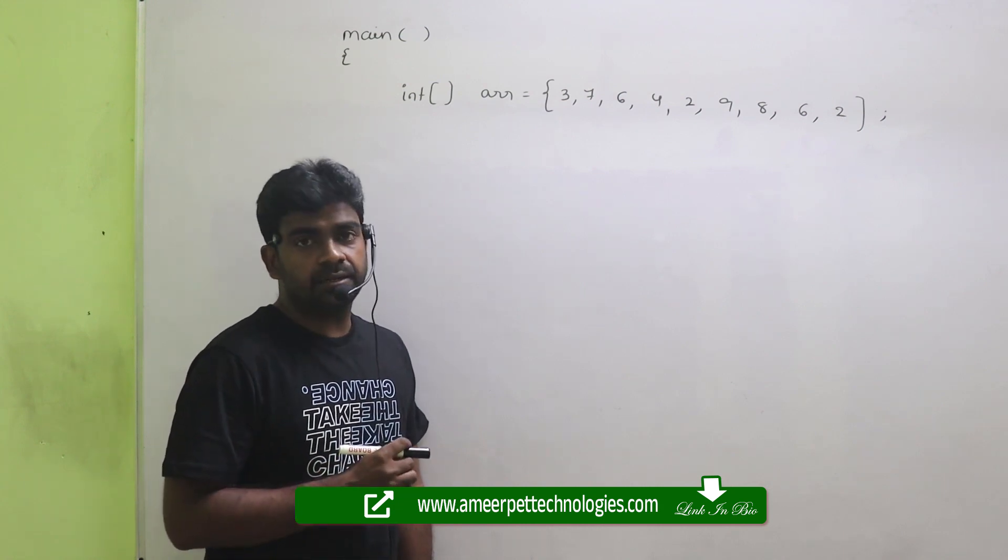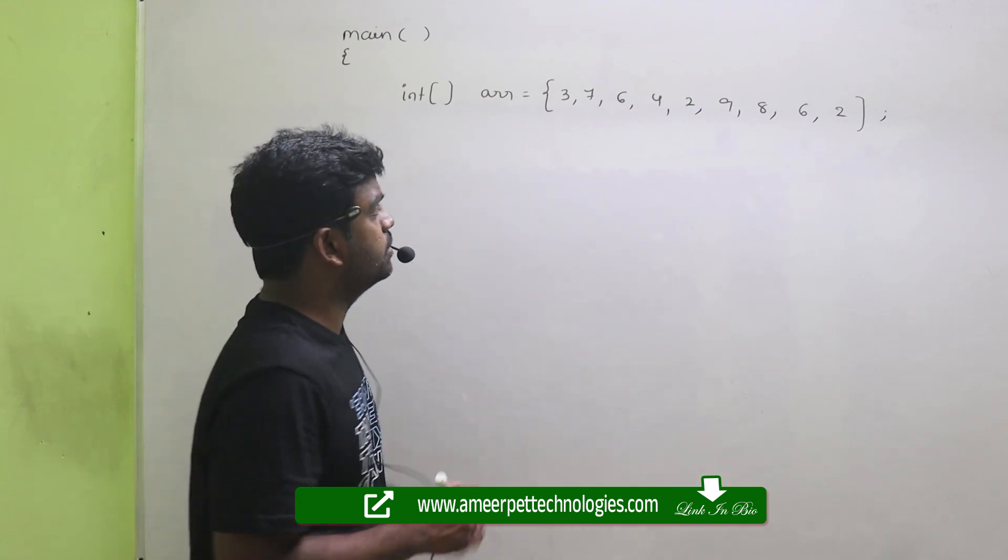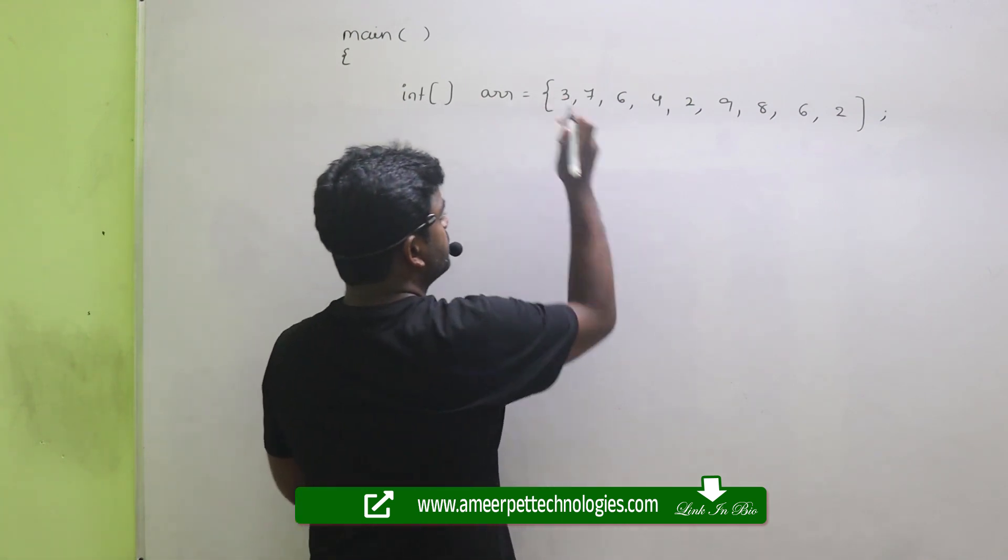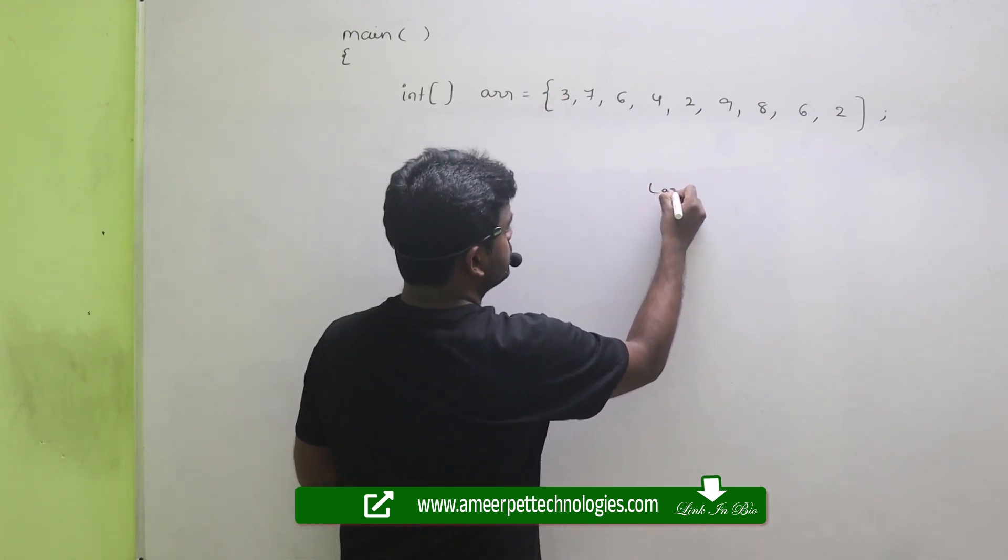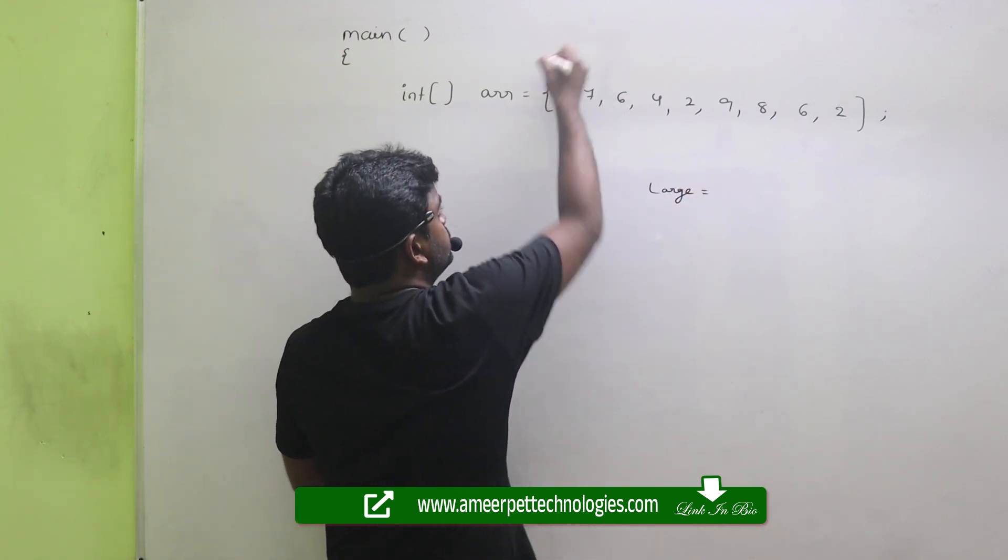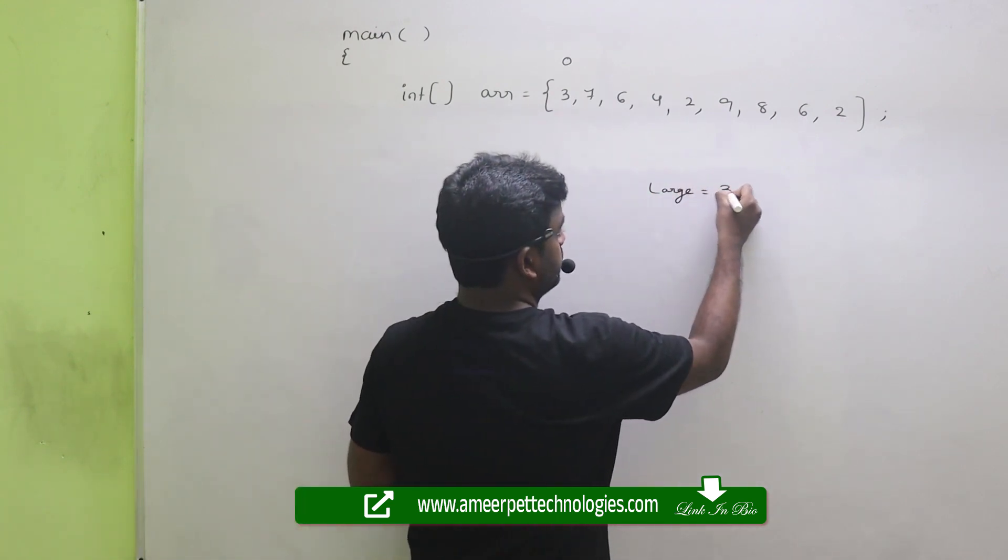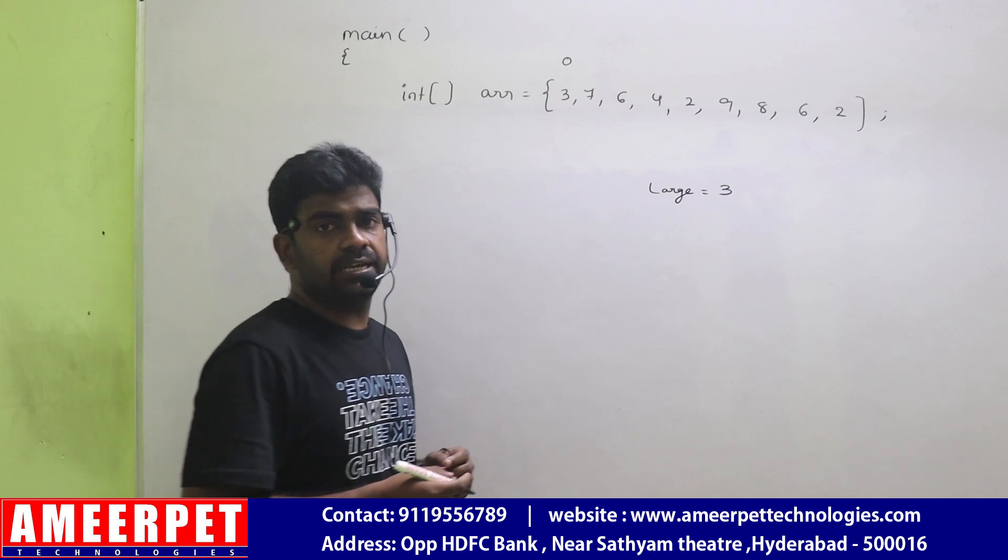How to find the largest element in the given array. First of all, consider that the first element only as the largest element in the array. The element which is in 0th location is considered as the largest element. Suppose 3 is the largest element.